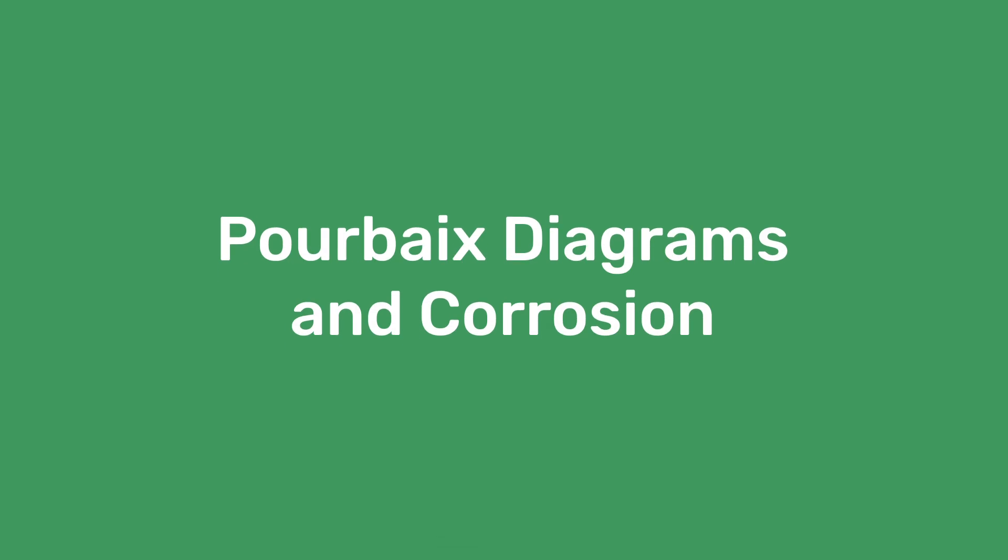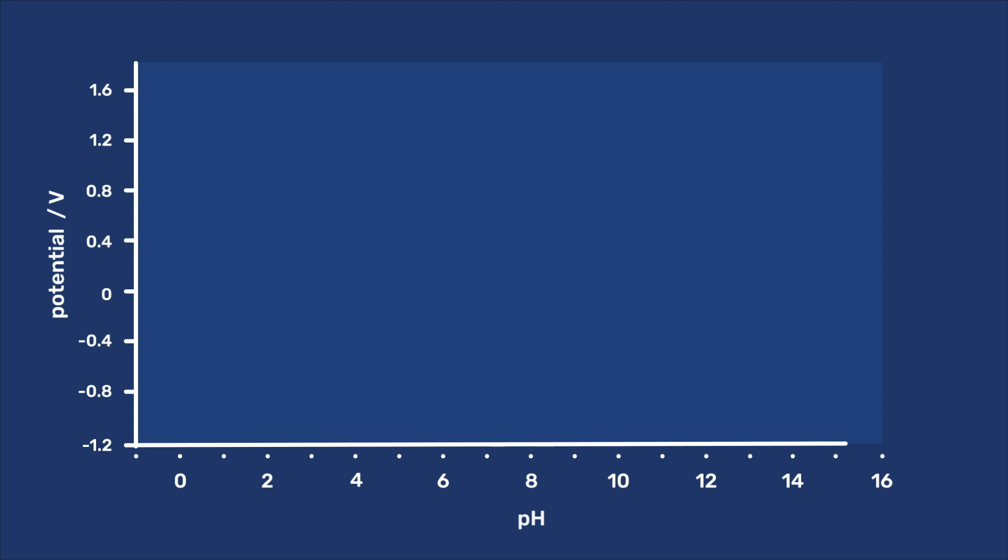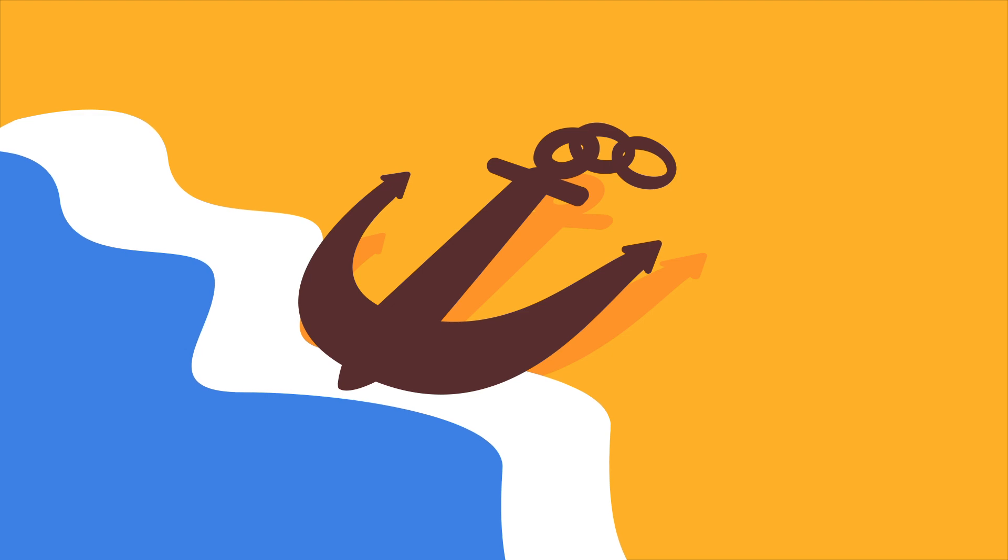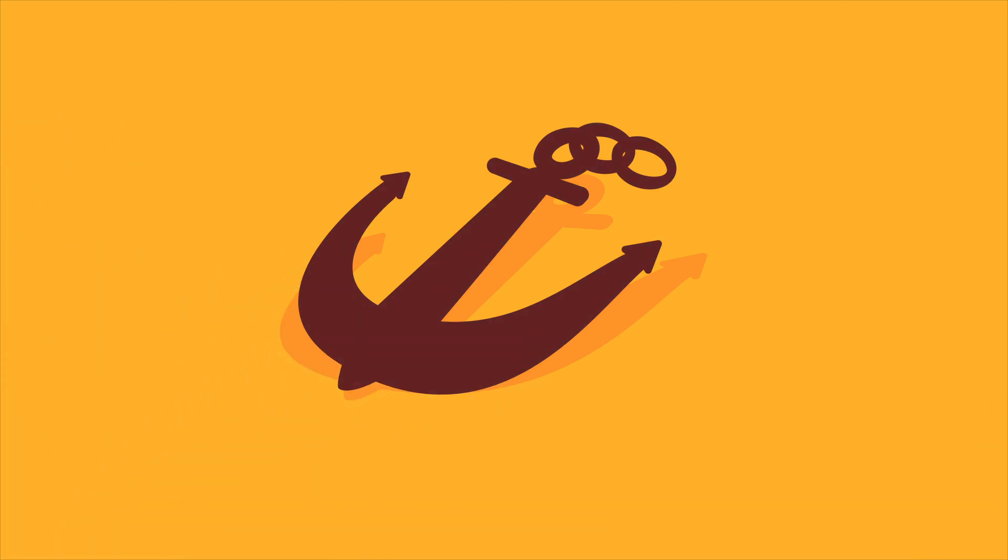In this video, we introduce Pourbaix diagrams. These are plots of potential versus pH, and are particularly useful in corrosion science as they define the conditions under which a given metal can corrode.